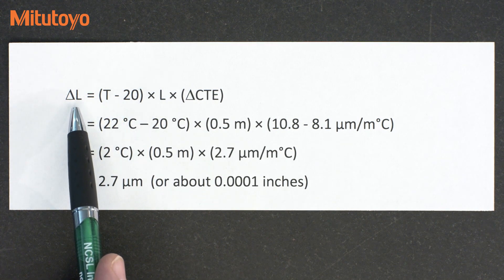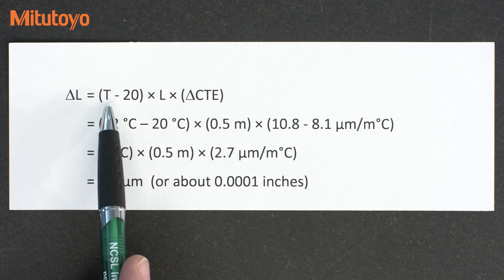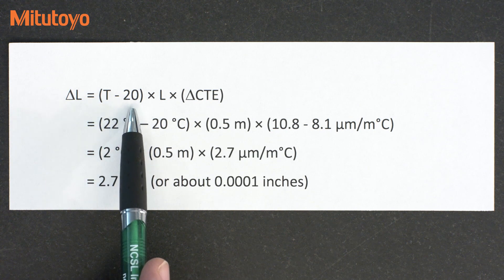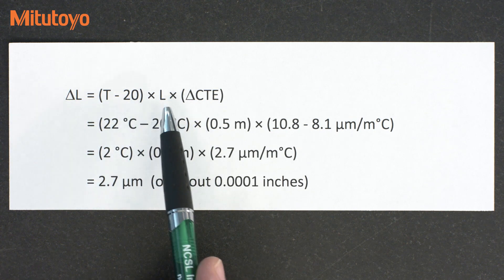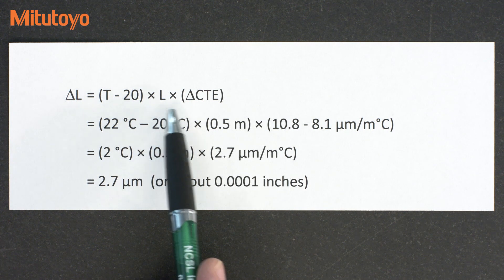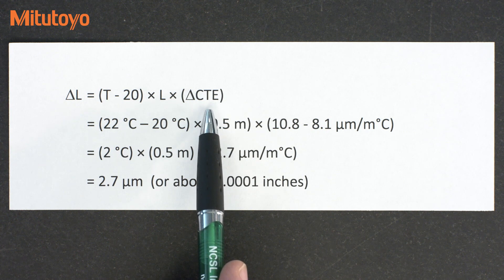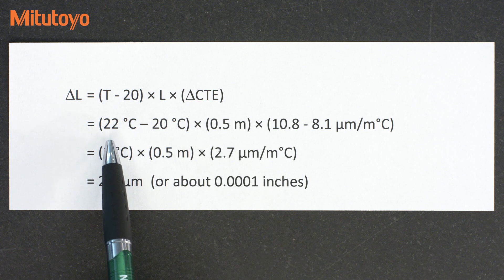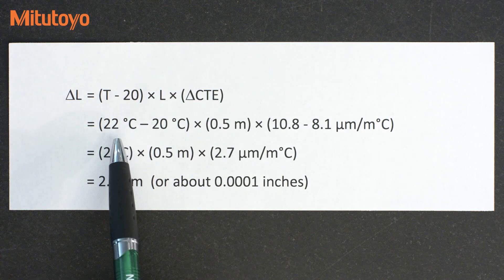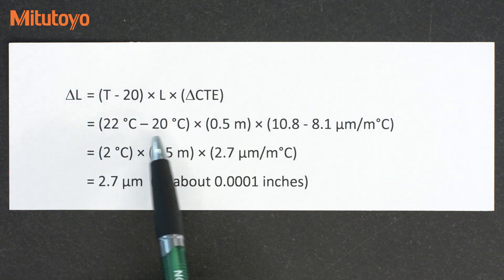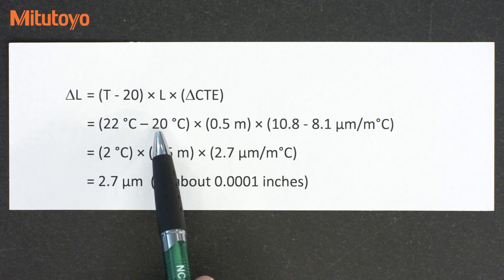The equation looks like this: the change in length equals the temperature we're at minus 20 degrees C (the reference temperature), times the length L, times the difference in CTE between the linear height scale and the gauge block material. So we're at 22 degrees C — that's 22 minus 20 — and we have a 500 millimeter gauge block, which is half a meter.